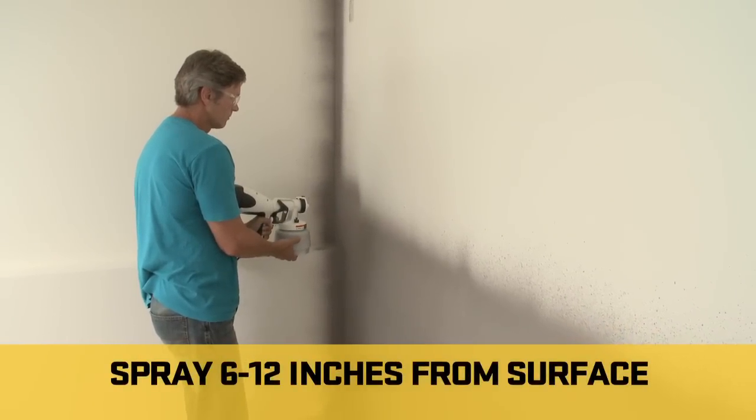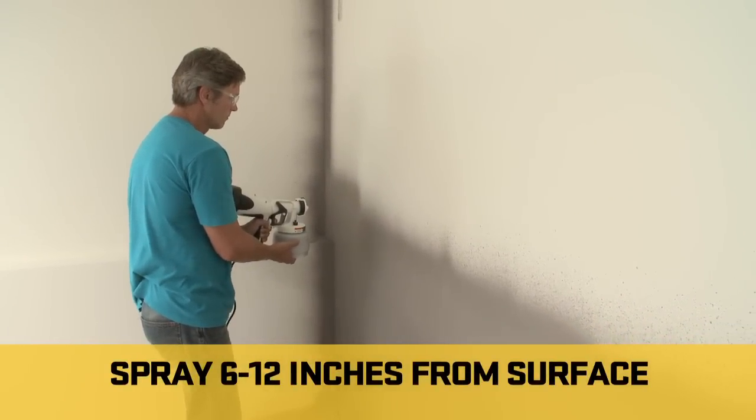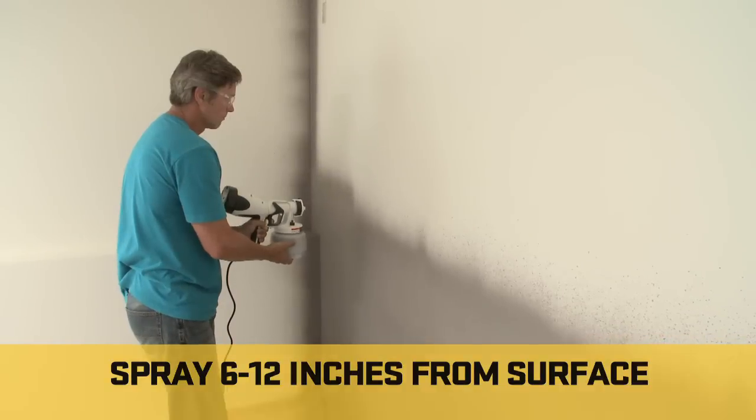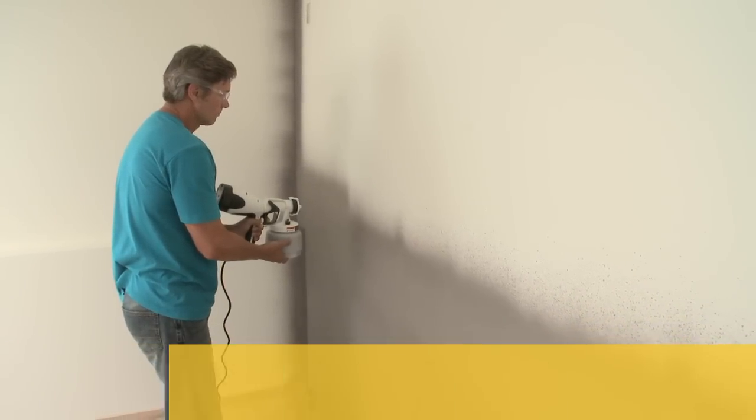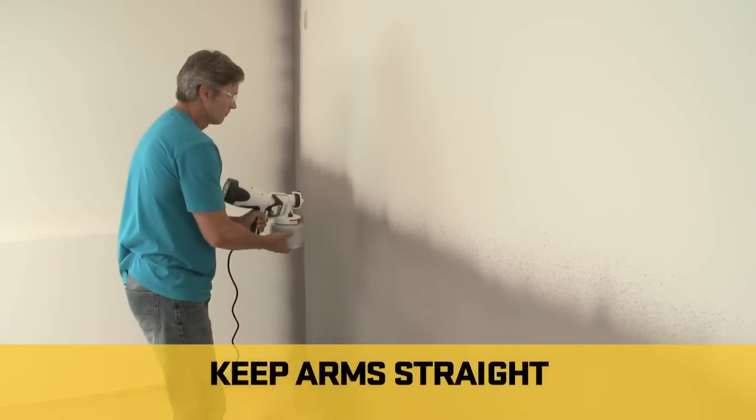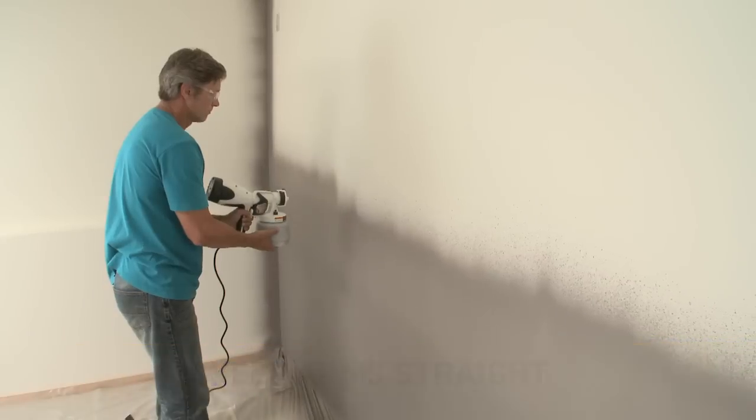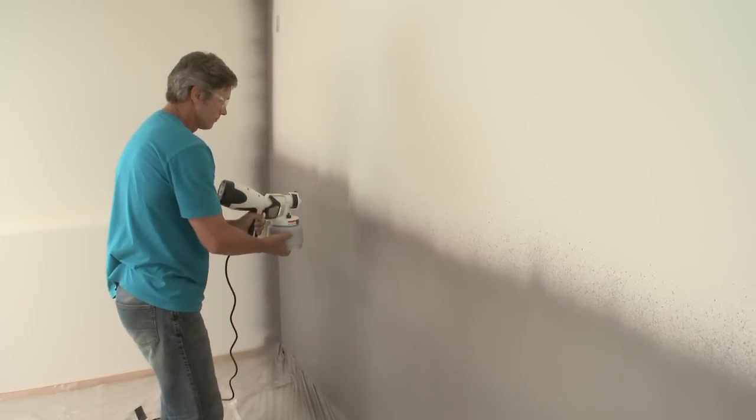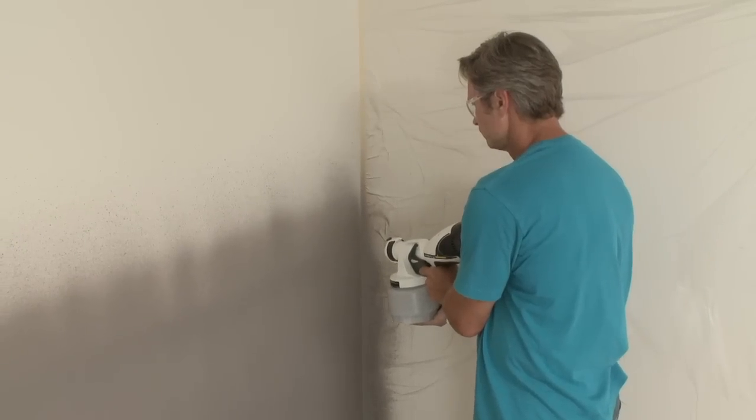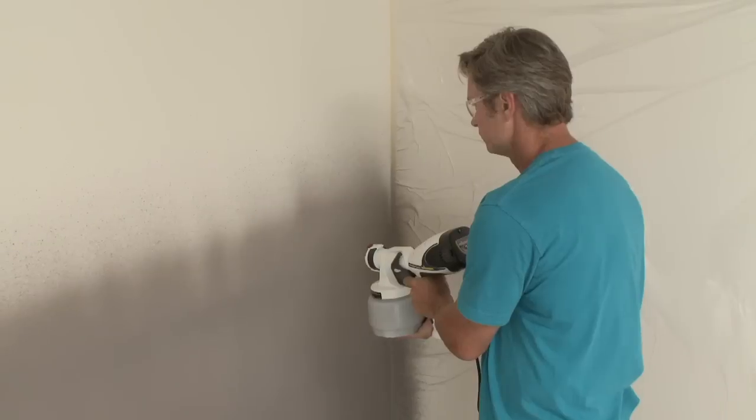Point the sprayer 6 to 12 inches away from the surface as you begin to spray evenly in a direction parallel to the surface. Remember to keep your arms straight as you spray. Bending your wrists or slowing your pace tends to leave too much paint in one spot. Remember, always keep moving continuously while spraying.